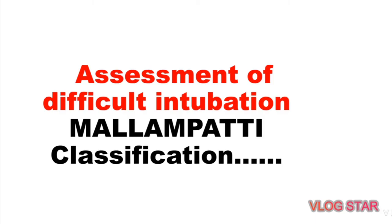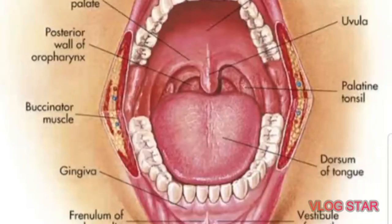Today's class is about assessment of difficult intubation, covering Mallampati classification. Before going to Mallampati classification or Mallampati grading, certain structures must be known: these are the uvula, hard palate, soft palate, and faucial pillars.